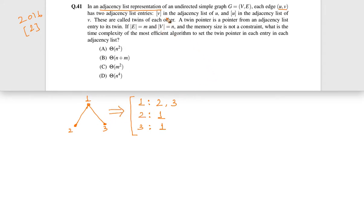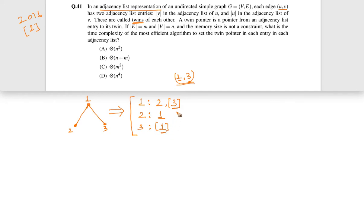For each edge (u, v) — for example edge (1, 3) — v will be in the adjacency list of u, and u will be in the adjacency list of v. So 3 will be in the adjacency list of 1, and 1 will be in the adjacency list of 3. That is true.